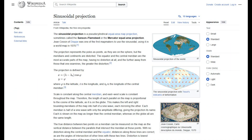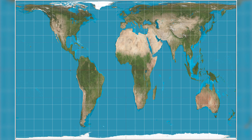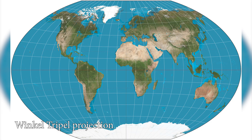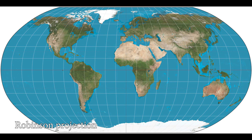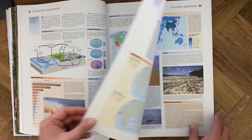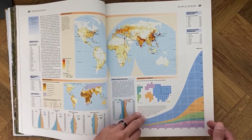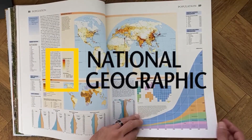Other projections, like sinusoidal and Gall-Peters, preserve land area but distort the shapes and proportions of continents. Meanwhile, modern projections like Winkel Tripel (1921) and Robinson (1963) aim for a compromise between preserving land area and minimizing distortion. These projections are widely used in atlases and by organizations like the National Geographic Society.